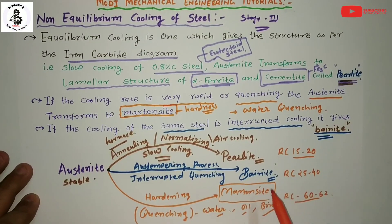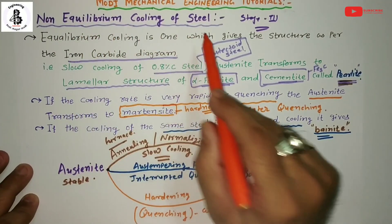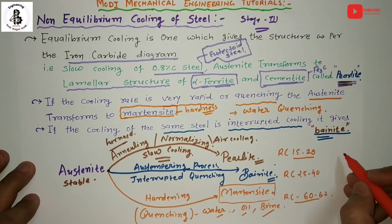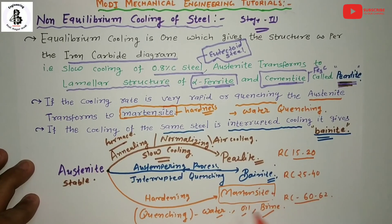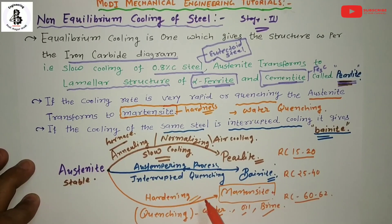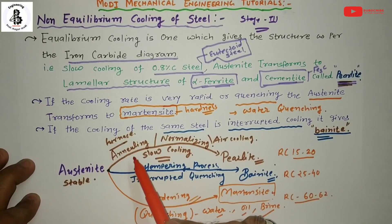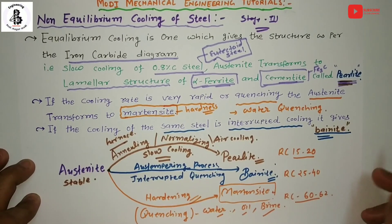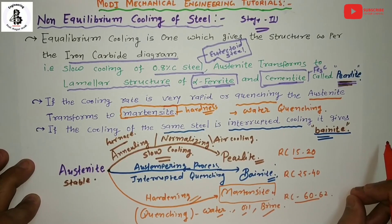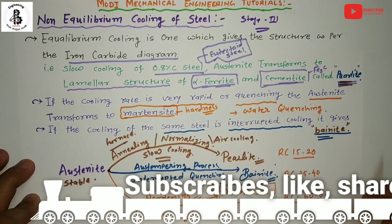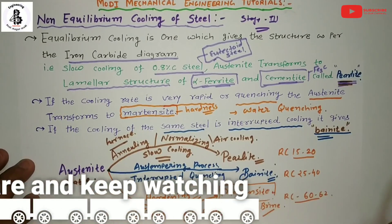These structures are only found when performing non-equilibrium cooling of steels, and the choice depends on your requirements and applications. For cutting tool materials, heat the material to stable austenite and perform the hardening process. For improving ductility and relieving stress, use annealing or normalizing as per requirements. I hope you understand the theory of non-equilibrium cooling of steels. If you like this, please subscribe and share more mechanical engineering tutorials. Thank you so much and keep watching.